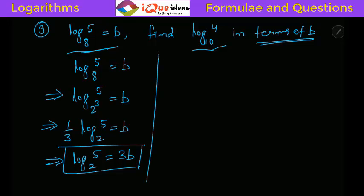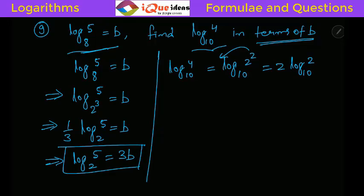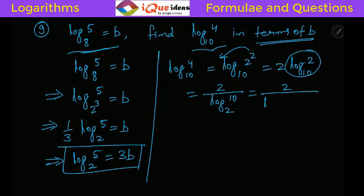Now simplify log 4 base 10. Write it as log 2^2 base 10, so the power 2 comes out: 2·log 2 base 10. Sending log 2 base 10 to the denominator converts it to log 10 base 2. Since 10 equals 5 times 2, this becomes 2 divided by log(5×2) base 2.